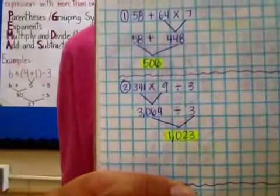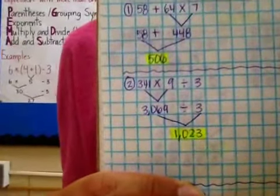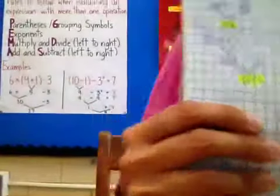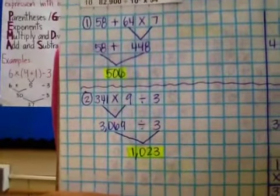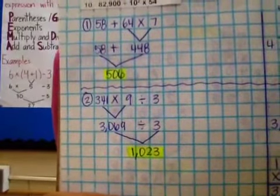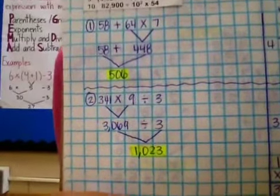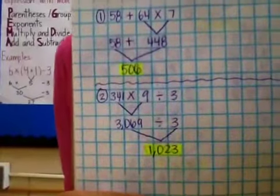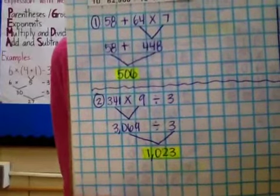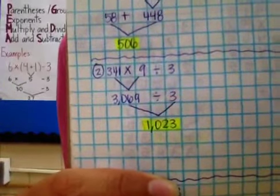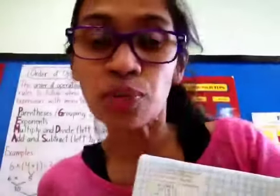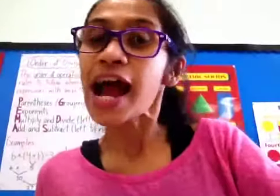For number two, the answer is 1,023. First I multiplied 341 times 9 and got 3,069 — show that work right there. And then divided by 3 — show that work right there.